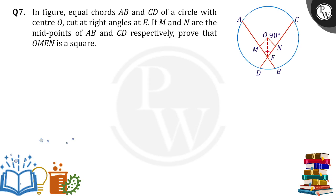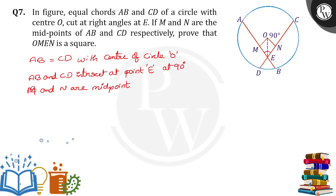So here observe carefully it was given that equal chords. What are the equal chords here? AB chord is equal to CD chord with center of the circle as O. Now they cut each other, AB and CD intersect at point E at 90 degrees. And M and N are midpoints of AB and CD respectively.